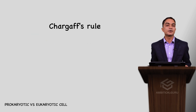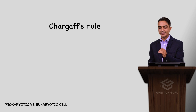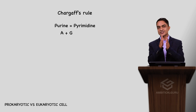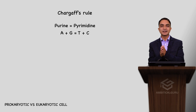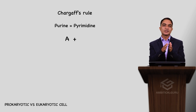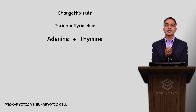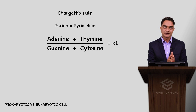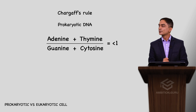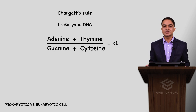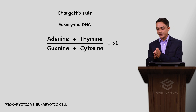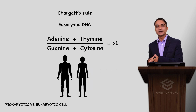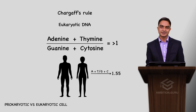An important concept is Chargaff's rule: the amount of purine equals the amount of pyrimidine. Adenine combines with thymine. The ratio of A+T to G+C: in prokaryotic DNA this value is lower than 1 (e.g., in E. coli bacteria it is about 0.9), while in eukaryotes this value is greater than 1 (e.g., in humans it is about 1.55). The GC ratio is higher in prokaryotes and lower in eukaryotes.